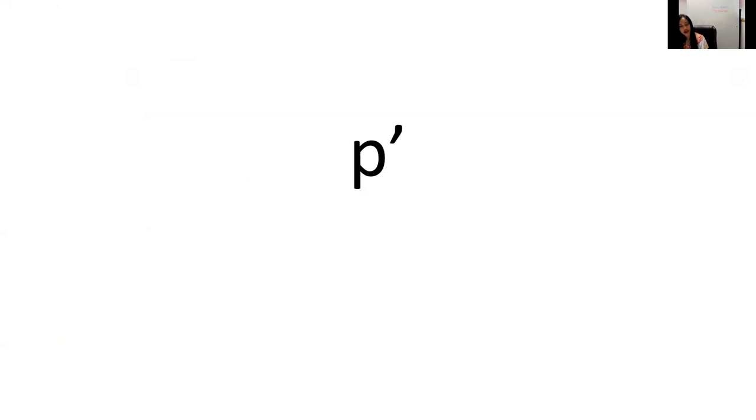A good example for the ejective P would be the word 'out.' This M is the same as it would be in English. The column word for cow is 'moose' — this is an ejective M, so you're going to have to pop it out a little bit more. A good one would be 'cm.'